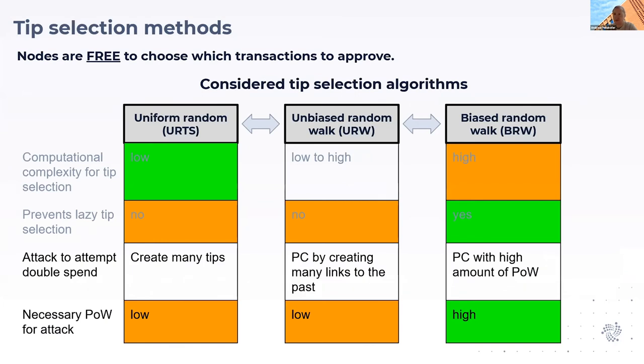With the biased random walk, the attacker has to actually outperform or almost outperform the main network temporarily in order to overtake the main Tangle, the honest part of the Tangle. So this is more secure in these terms.